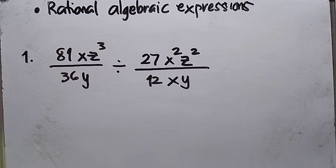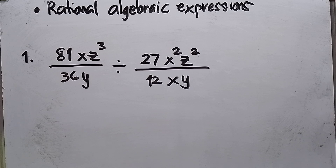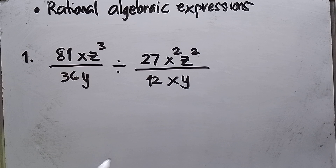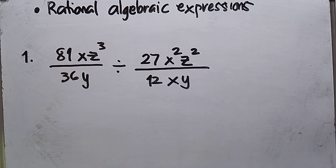Hello, viewers. Today's topic is about rational algebraic expressions. This math is intended for Grade 8. I have here two fractions with variables. Number one: 81xz³ over 36y is divided by 27x²z² over 12xy. Our task for number one is to find the quotient.